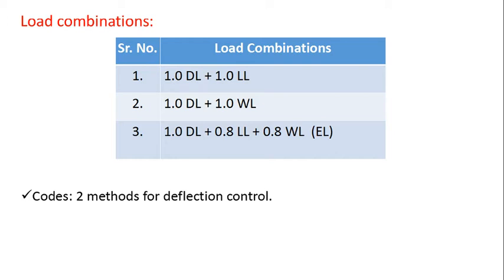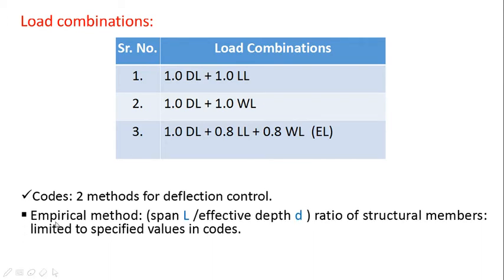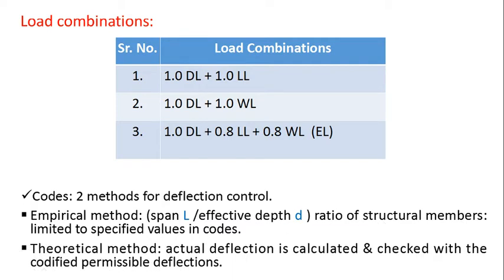The code predefines two methods for deflection control. Method one is empirical method, that is, span L by effective depth D ratio of structural members are limited to specified values in the codes. Then there is a theoretical method where deflection is calculated and checked with the codified permissible deflection.